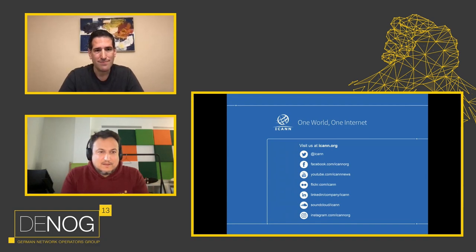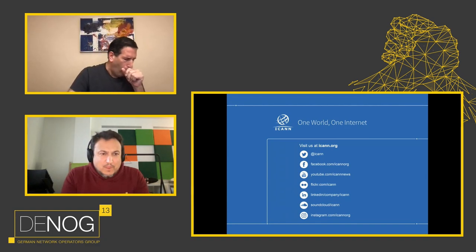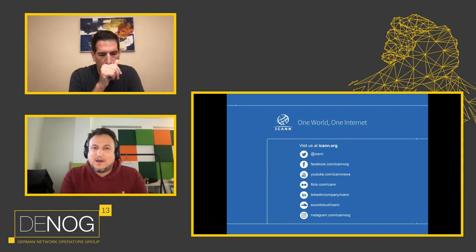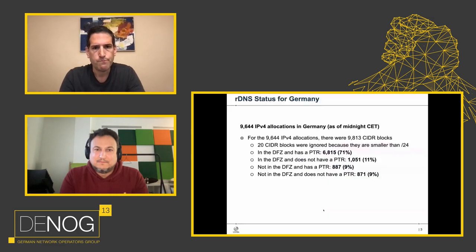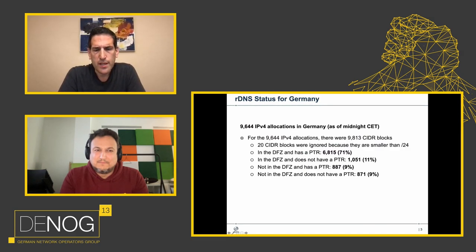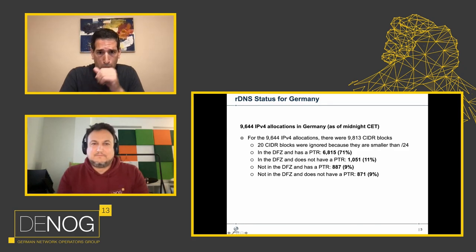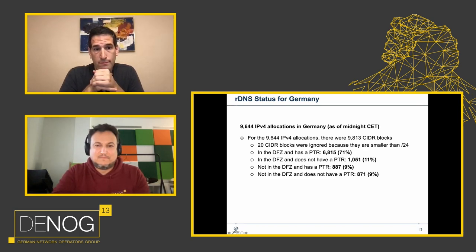There are a couple of questions coming in. First question: shouldn't 'in DFZ and have a PTR' plus 'in DFZ and no PTR' add up to 100%? No, because if you're not in the DFZ, you can still have a PTR — I can still scan the authoritative name server and check. So it's all four categories together.